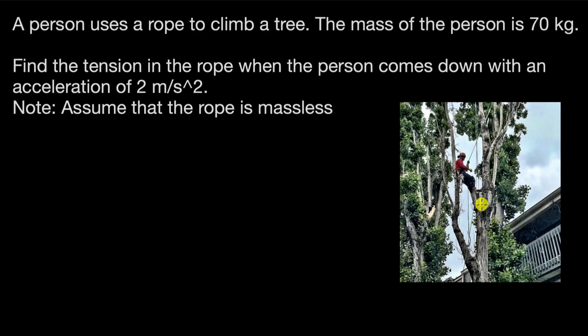Let's solve a question on tension. Here we have a person who uses a rope to climb a tree and the mass of the person is 70 kilograms. Find the tension in the rope when the person comes down with an acceleration of 2 meters per second square. And we can assume that the rope is massless.